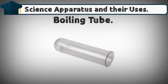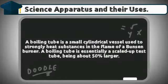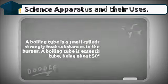Boiling tube. A boiling tube is a small cylindrical vessel used to strongly heat substances in the flame of a Bunsen burner. A boiling tube is essentially a scaled-up test tube, being about 50% larger.